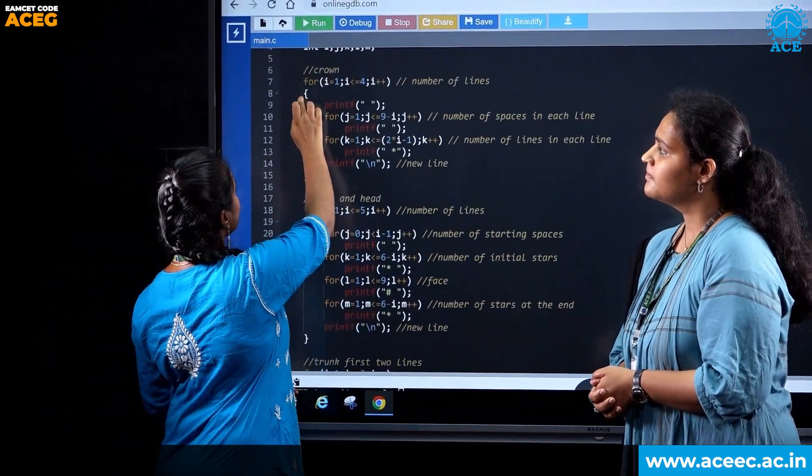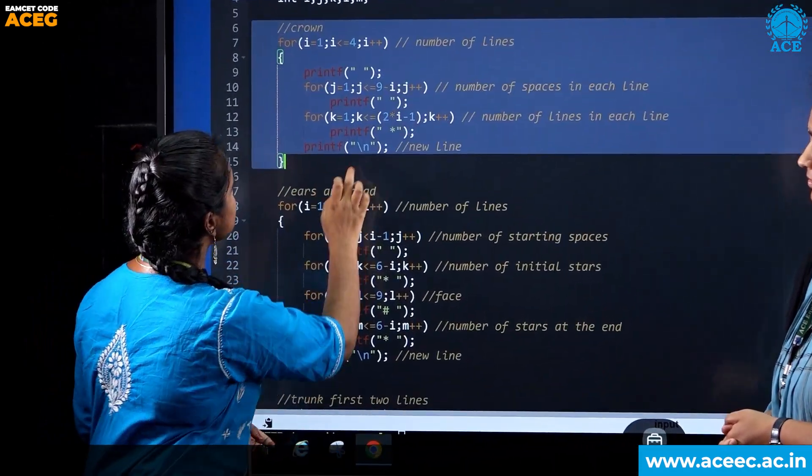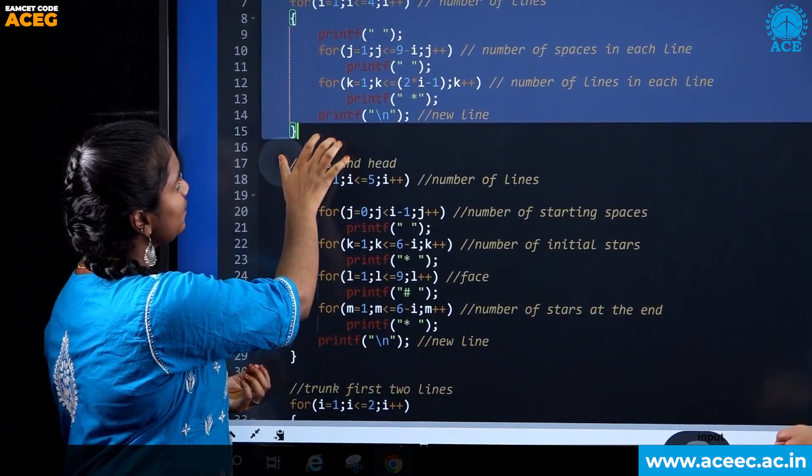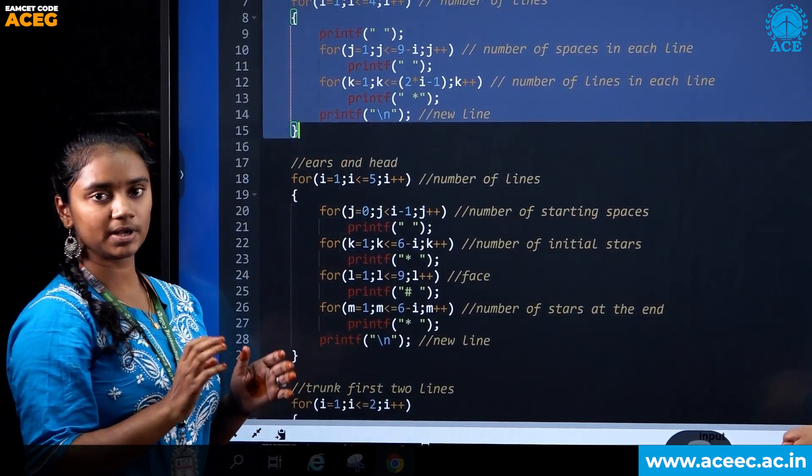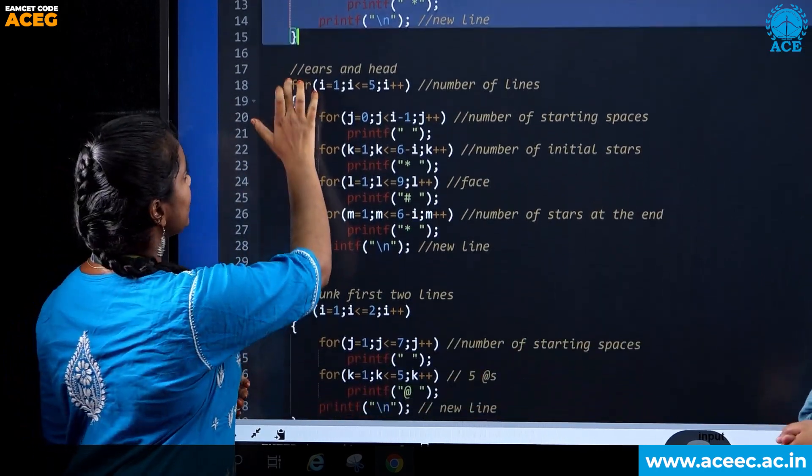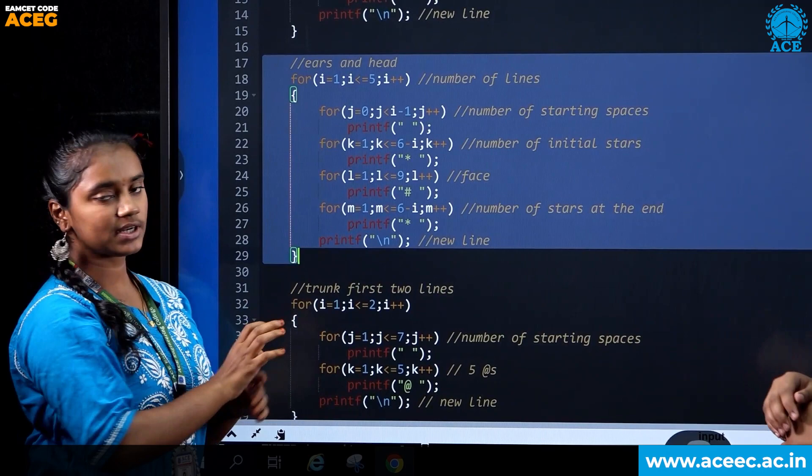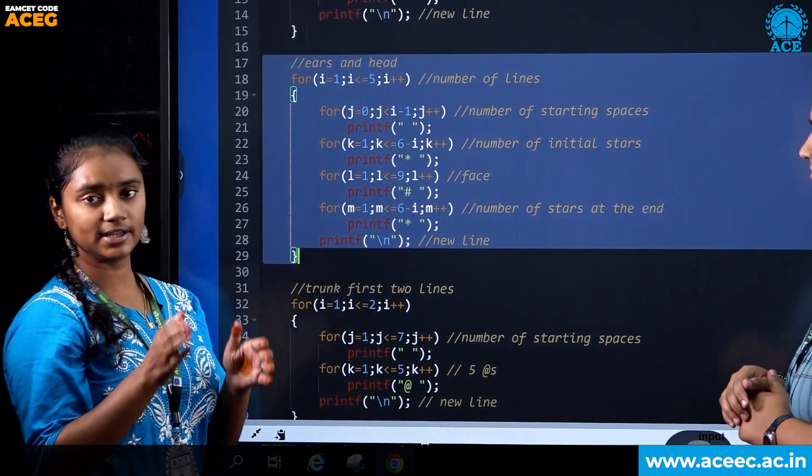Coming to the crown part, here we can see we use nested for loops. You can see throughout the program we will be using nested for loop. Here we declared three variables to print in crown shape in a pyramidal form. Next, coming to the ears and head part, here we used all the five variables to print in such a way first ear, head and ears form.